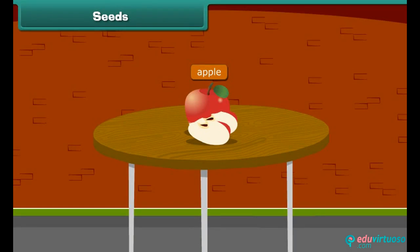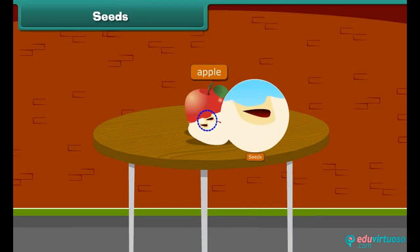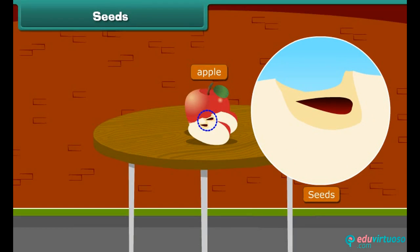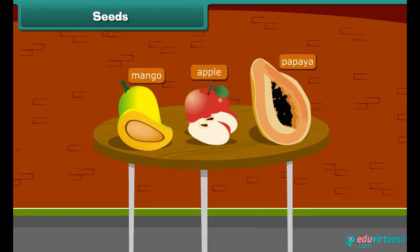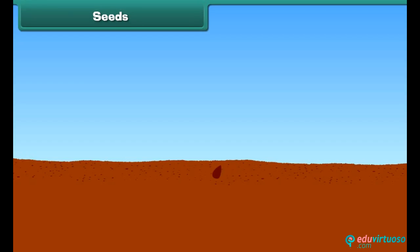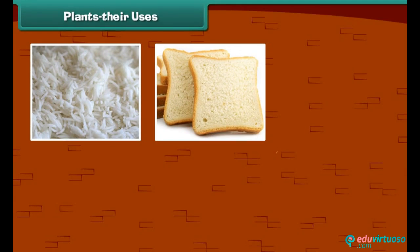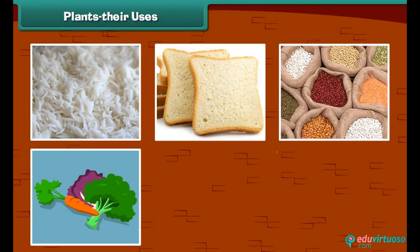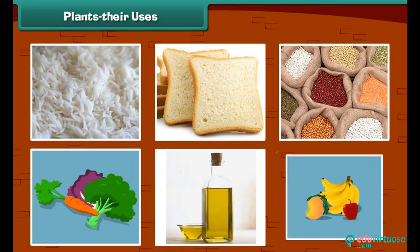When we cut an apple, what do we see at the center? Yes — we see small, dark brown seeds. Other fruits have seeds inside them too, such as papaya and mango. A new plant grows from a seed. As we know, we get our food items from plants.